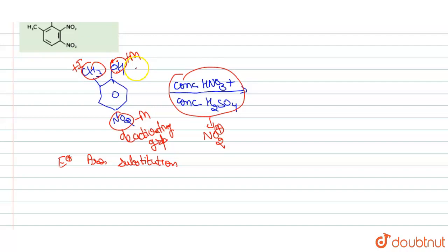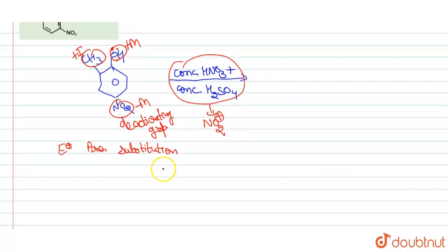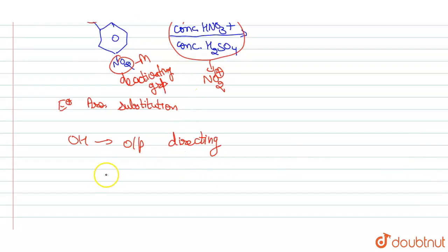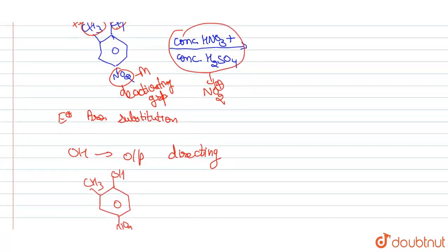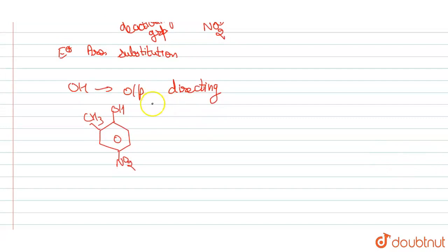OH increases electron density in the benzene ring more than CS₃, so the position of the incoming electrophile NO₂⁺ is decided by OH. OH is an ortho-para directing group, so NO₂⁺ will be directed to either the ortho or para position relative to OH.